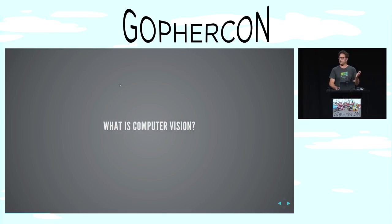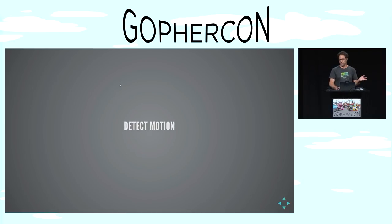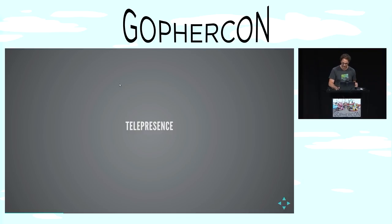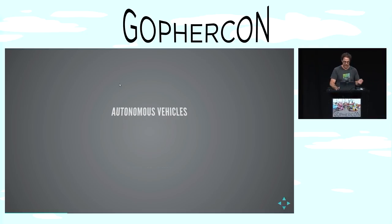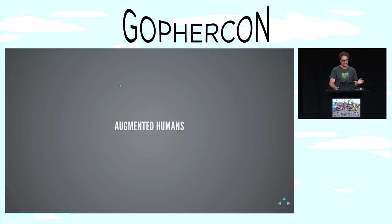So what is computer vision? Computer vision can detect motion, it can recognize people from their faces or other physical attributes, telepresence — which is when you are able to see things in a remote location via video streaming — autonomous vehicles, planes, trains, automobiles, and of course my personal favorite, multi-copters, and augmented humans. And when we say augmented humans, we're not just talking about giving people superpowers via the Internet of Things, but also important things like giving medical professionals the ability to better read a radiology report in ways that the un-augmented human eye cannot discern.